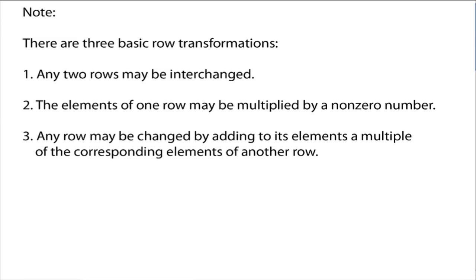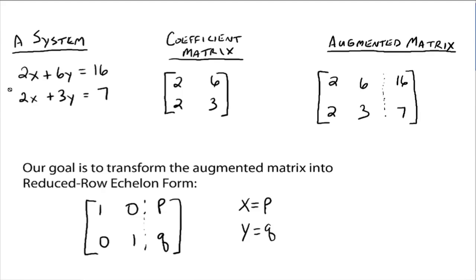All right? All right, the elements of one row may be multiplied by a non-zero number. All right, so that just means you can multiply any row by any number you want except for zero. So again, back here on this situation, that's like saying, well, let's multiply this first row here by negative one. That'd make this a negative 2x, a negative 6y, a negative 16. All right, you can do that. That's not going to change the solution to the system in the end.